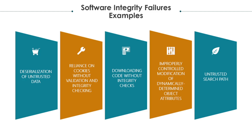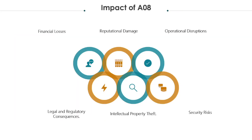And last, untrusted search path: for servers that use an external search path to access critical resources such as executable programs or DLLs, attackers can modify the path value to a location under their direct control. When the server executes the malicious resource placed in the untrusted search path location, attackers can access unauthorized files, send data to unexpected destinations, execute malicious updates, or modify the application's configurations. The impact of software and data integrity failures can be severe — it can result in financial losses, reputational damage, operational disruption, legal and regulatory consequences, intellectual property theft, and security risks.